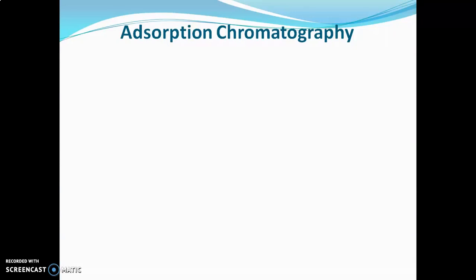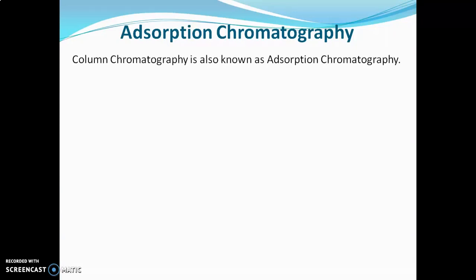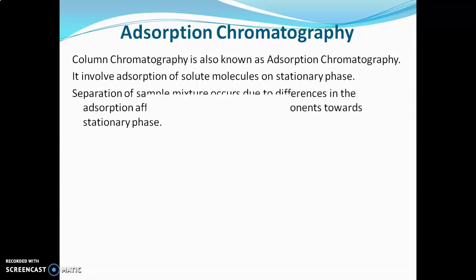First we will go for adsorption chromatography. Simple column chromatography is also known as adsorption chromatography. It involves adsorption of solute molecules on the stationary phase. The separation of sample mixture occurs due to differences in the adsorption affinity of sample mixture components towards the stationary phase.